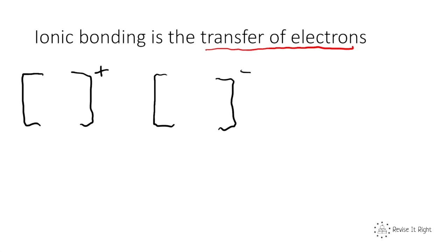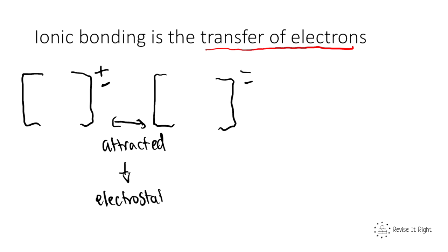So here we have a positive ion and a negative ion. These oppositely charged ions are now strongly attracted to each other by something called an electrostatic force, because they are oppositely charged — a positive and a negative attract. So they bond: the positive ion and the negative ion bond together.